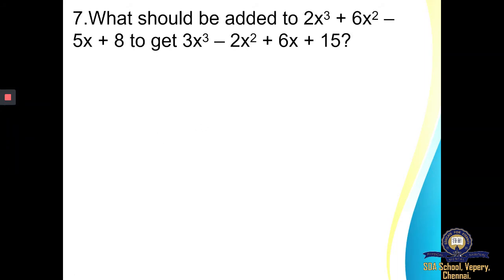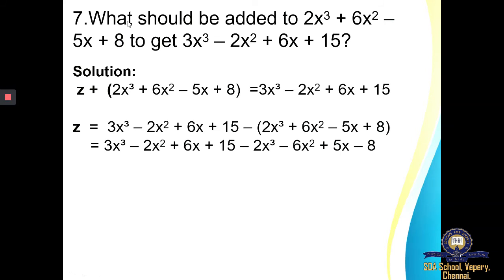Let us move on to question number 7. The question says: what should be added to 2X cube plus 6X square minus 5X plus 8 to get 3X cube minus 2X square plus 6X plus 15? First, in the place of 'what should be added' I have written some variable — let it be Z. Add it, so I put plus, to the given polynomial; to get means equal to the result polynomial. Then this polynomial will be shifted to the other side — the plus symbol becomes minus and it is written within brackets.